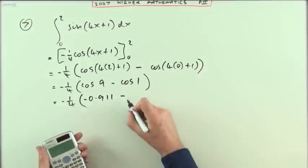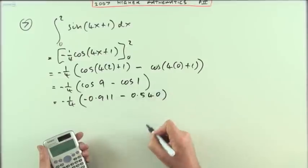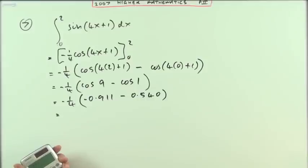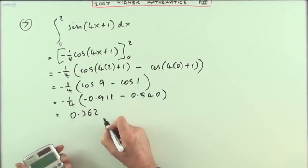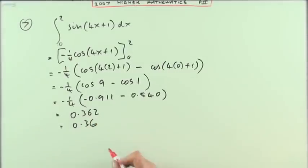Minus then there's the cos of one, which is 0.540 rounded off. And then just in case, I've typed that lot in, which gives me, because I don't bother putting that negative in there, 0.362 and so on. So we'll just call that 0.36, 0.362.